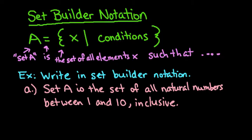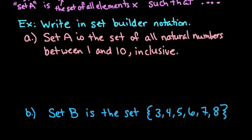So I have a couple of examples here. The first one is we're going to write set A in set builder notation. Set A is the set of all natural numbers between 1 and 10, inclusive. Let me grab a different color to make it easier to see.